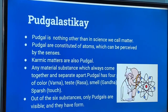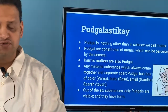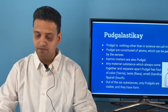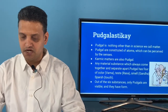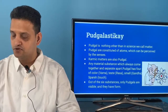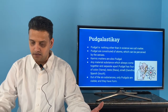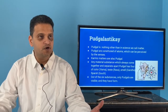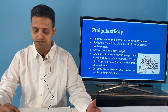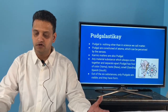First, let's talk about Pudgal. Pudgal is similar to what in science we call matter. Pudgal is constituted of atoms which can be perceived by the senses. Karmic matter can also be considered Pudgal. Any material substance which comes together and separates apart is called Pudgal. Pudgal has four properties: color, taste, smell, and sparsh — touch. Of all six substances, only Pudgal has a visible form.